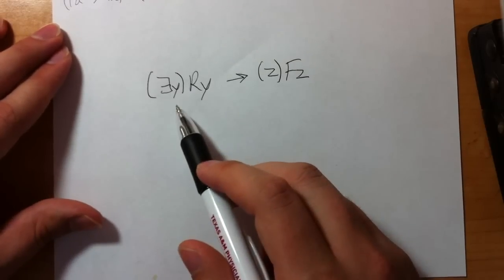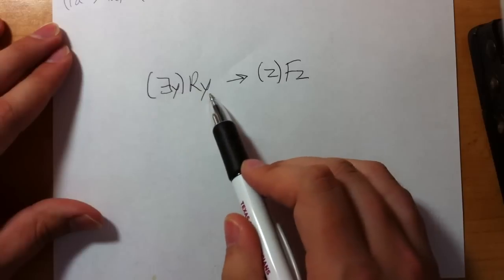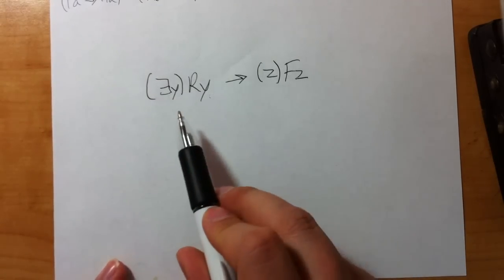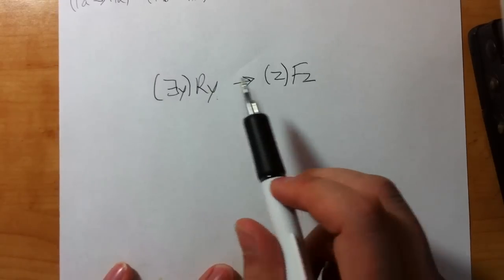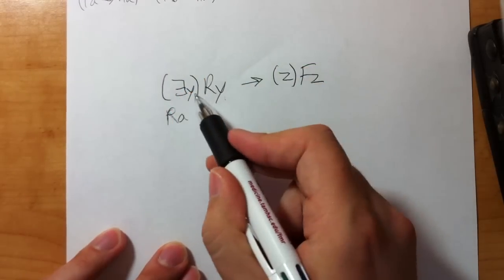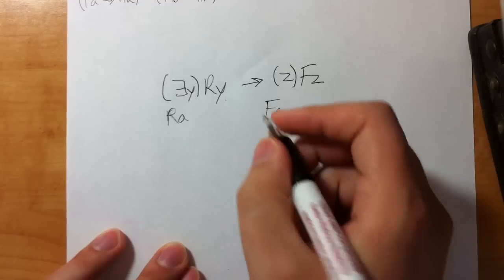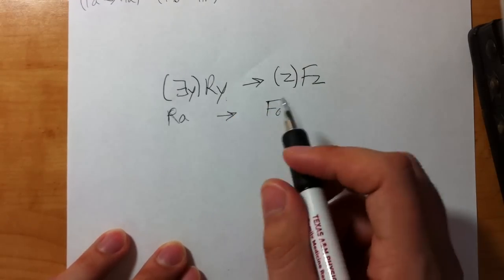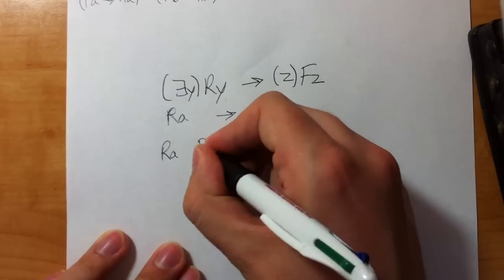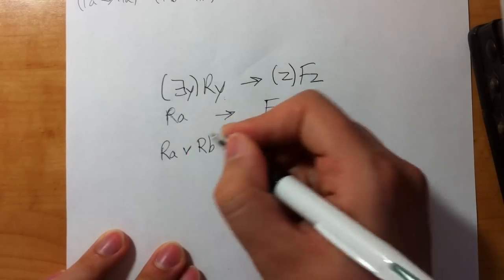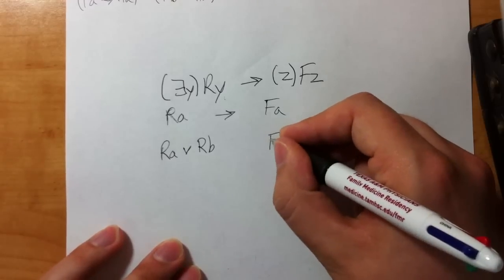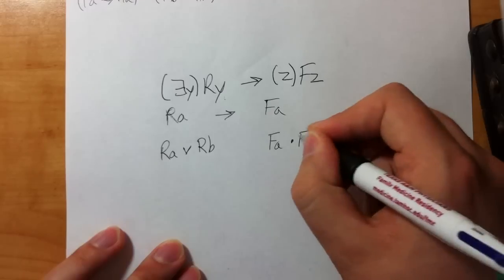What about a statement with two quantifiers, where one quantifier only quantifies RY and the other only quantifies FZ? The trick is you expand one side and then the other. For a one-element universe, just expand each quantifier separately. For a two-element expansion: existential Y RY becomes RA wedge RB; universal Z FZ becomes FA dot FB. Then wrap them in parentheses and bring down the arrow from the original line.